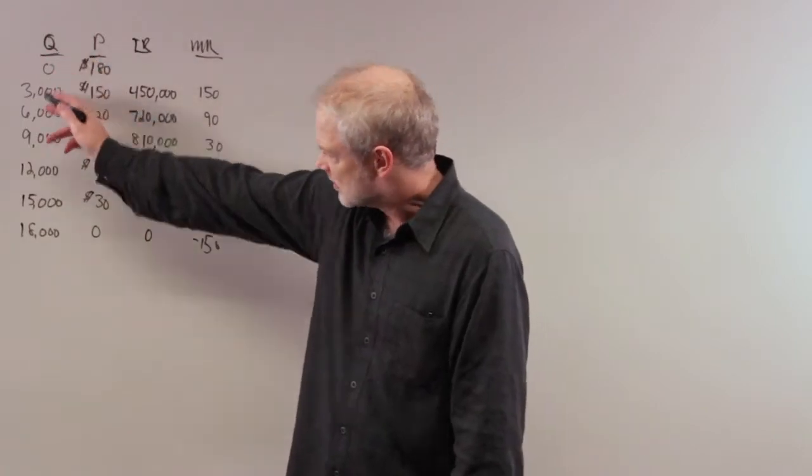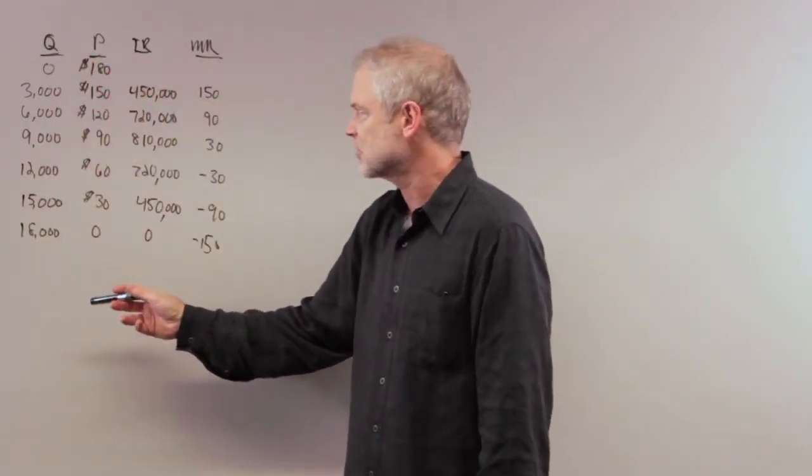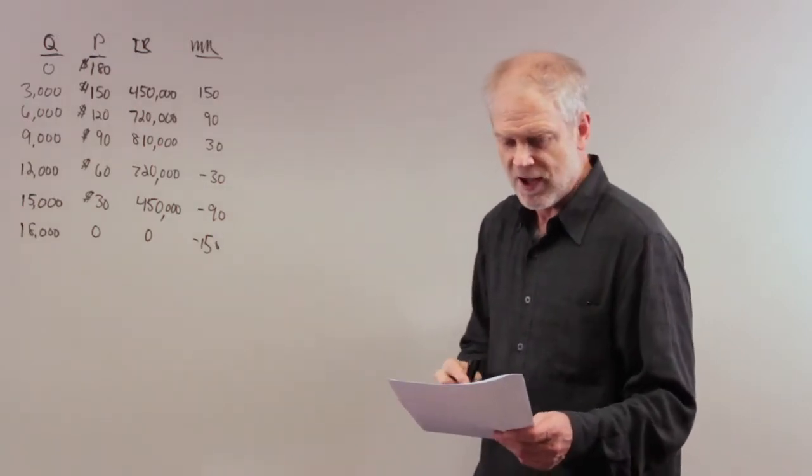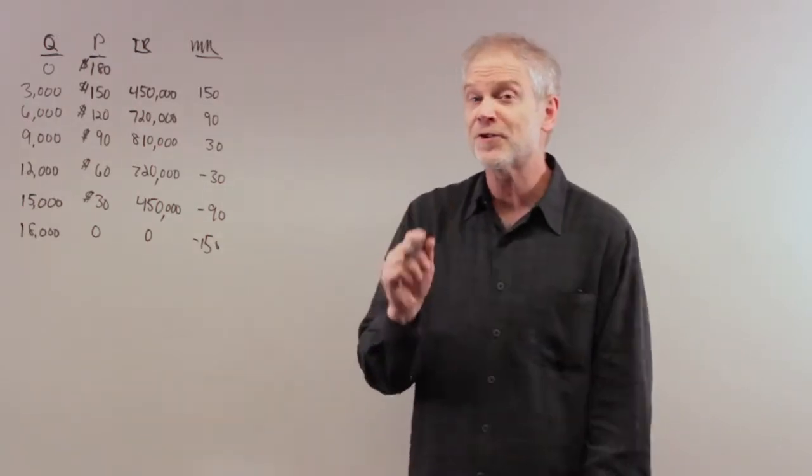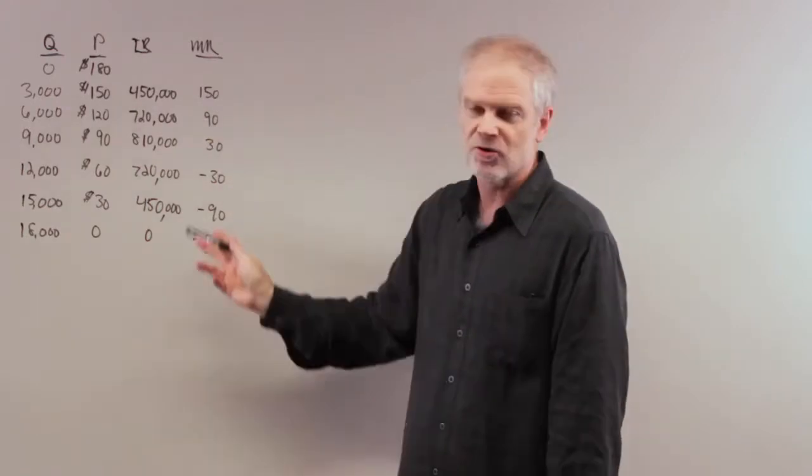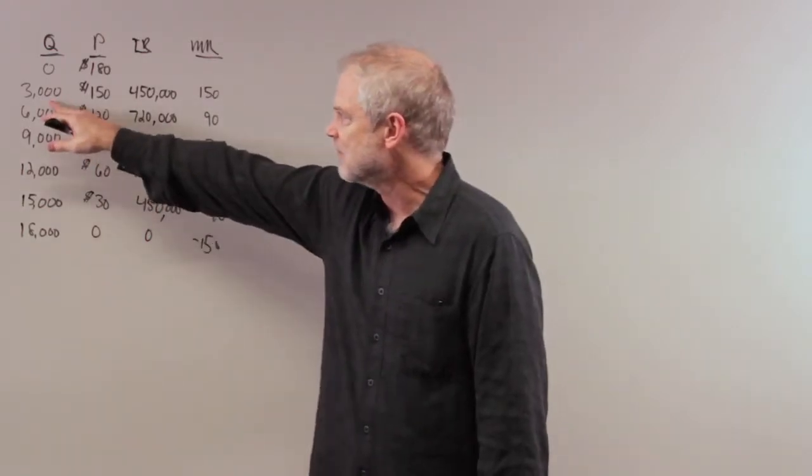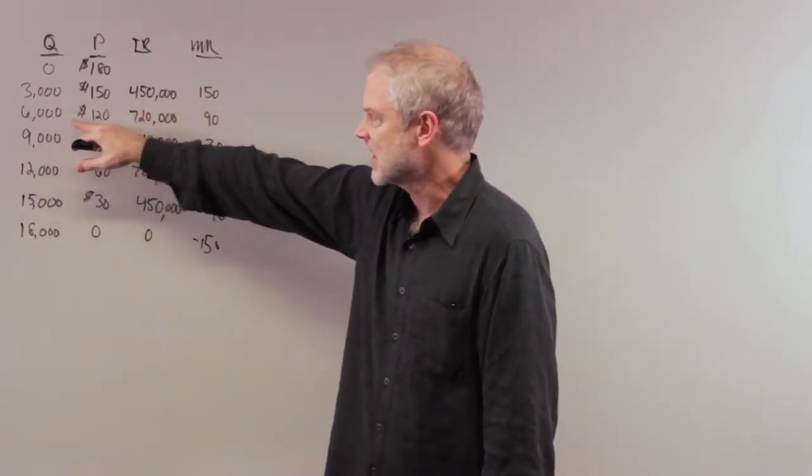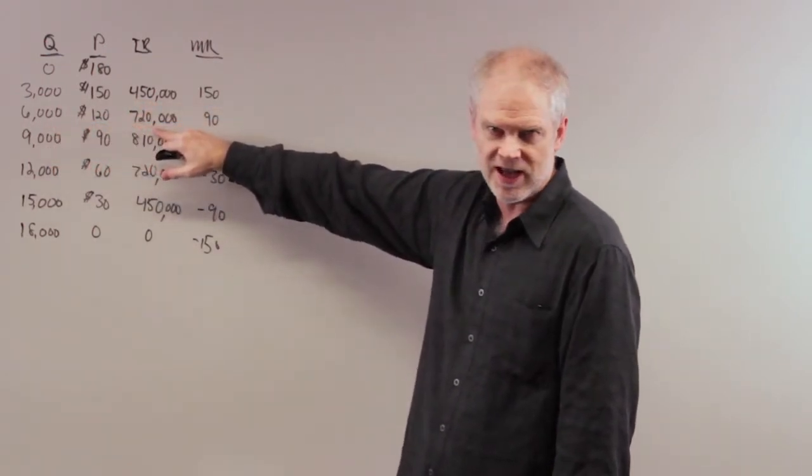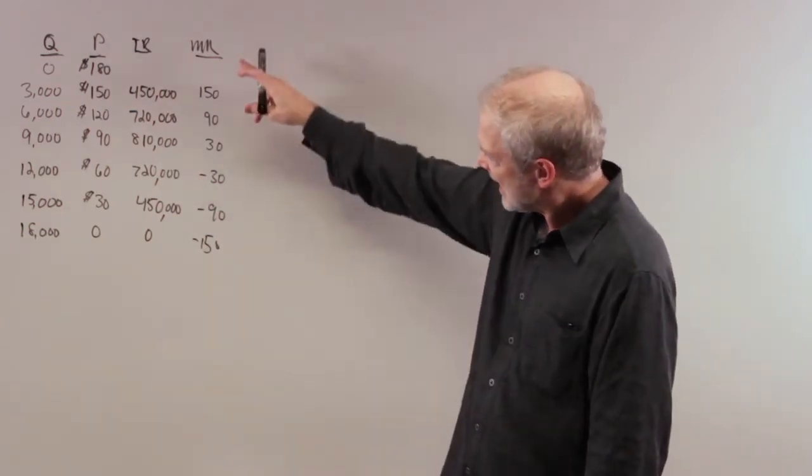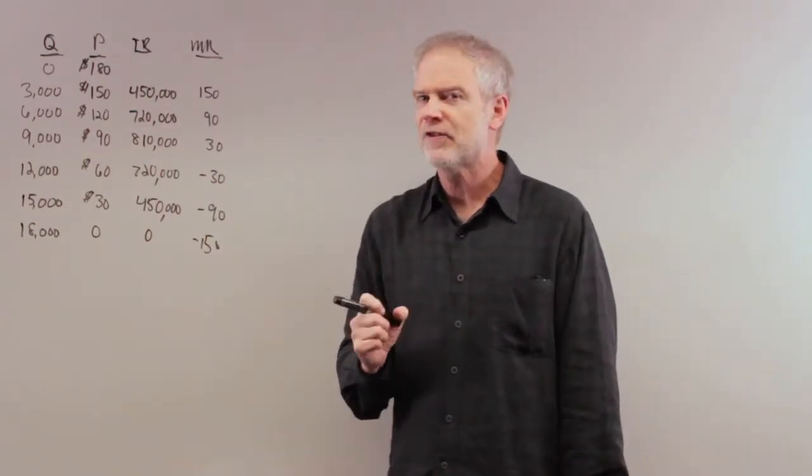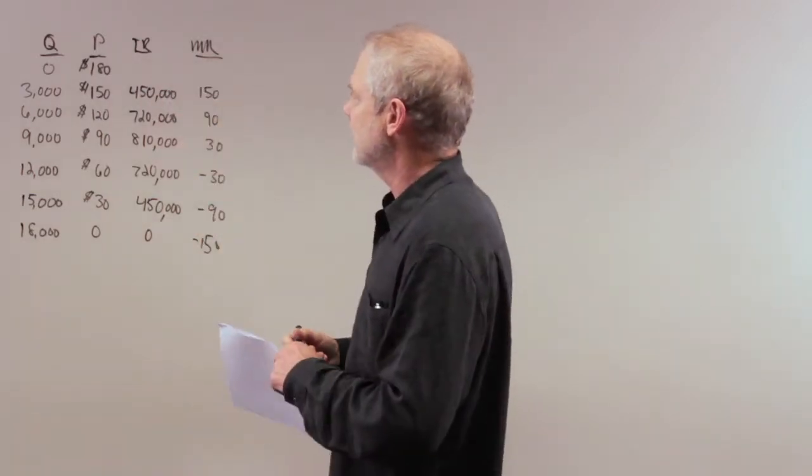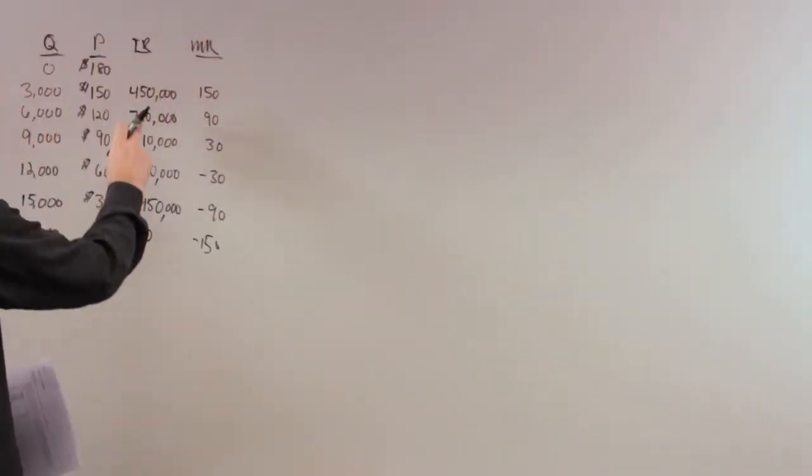The first thing you should do is add the total revenue. I simply multiplied P times Q: 3,000 times 150 to get 450,000; 6,000 times 120 to get 720,000. Next, I created a marginal revenue column.